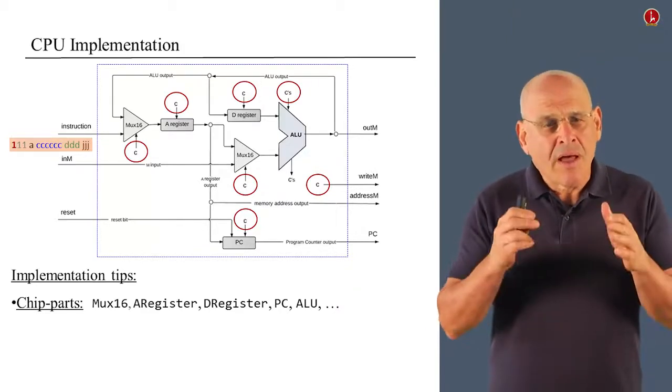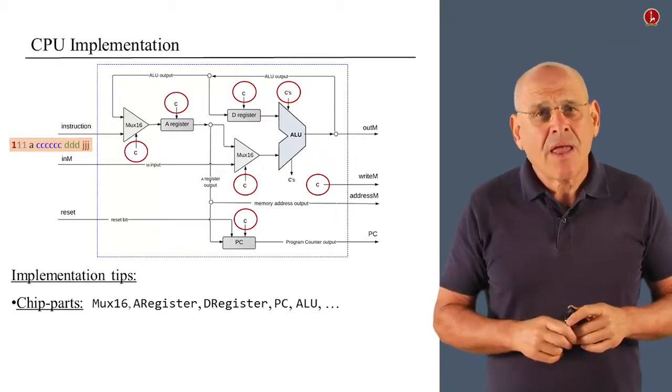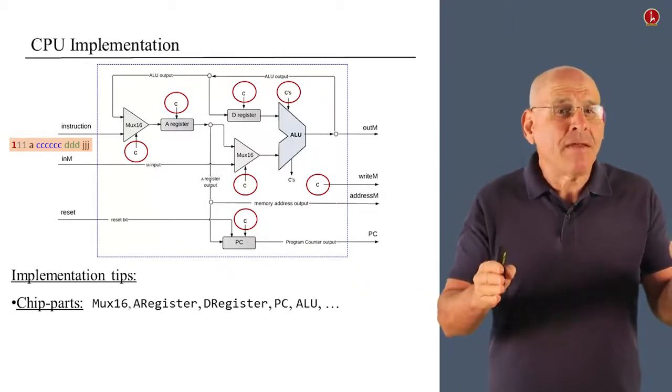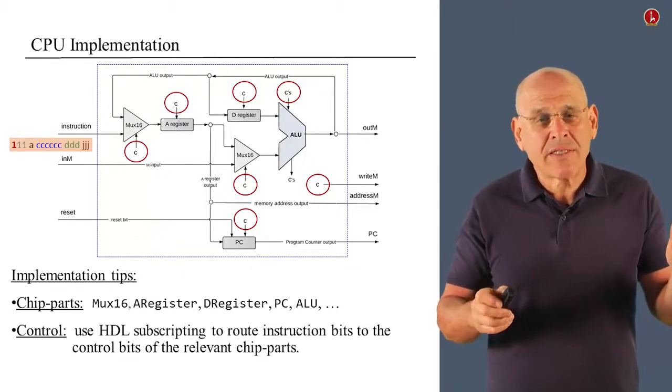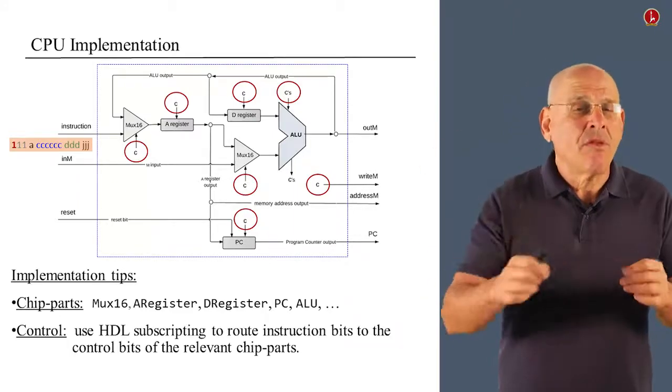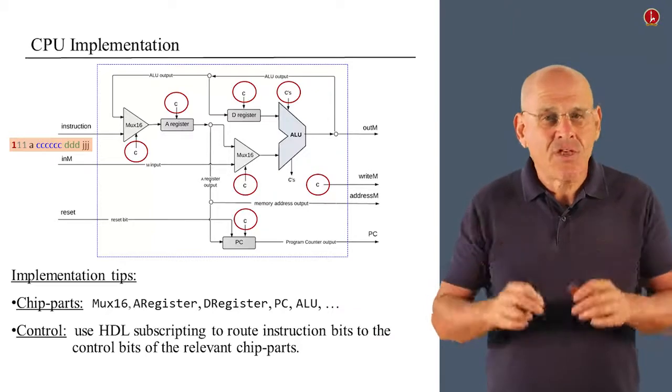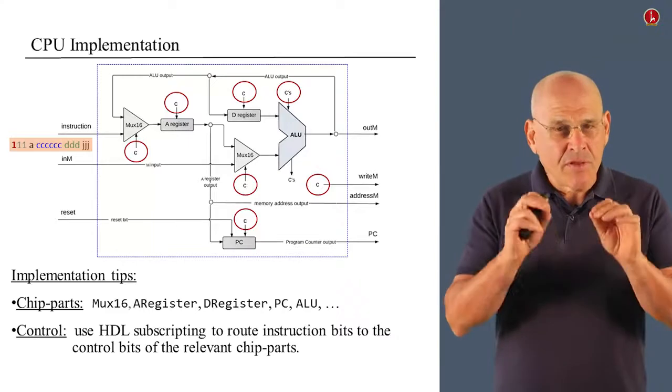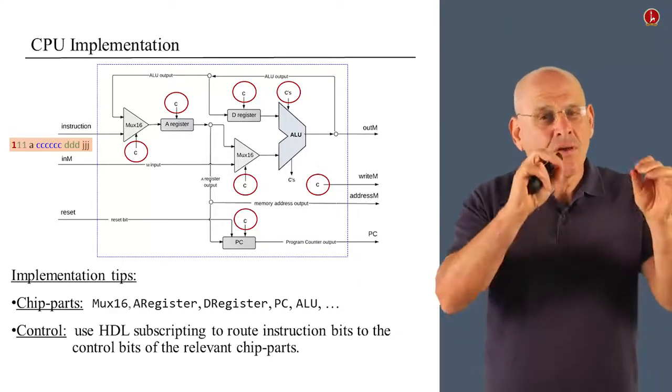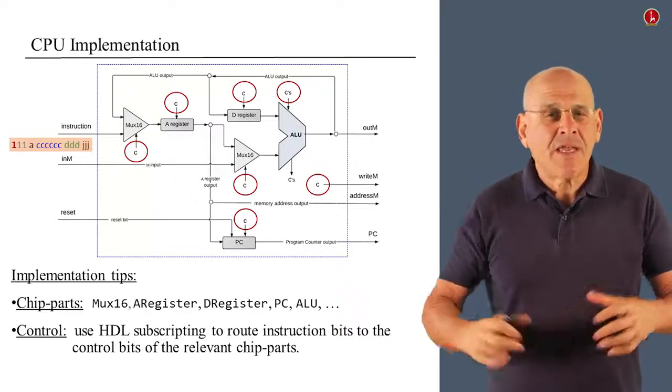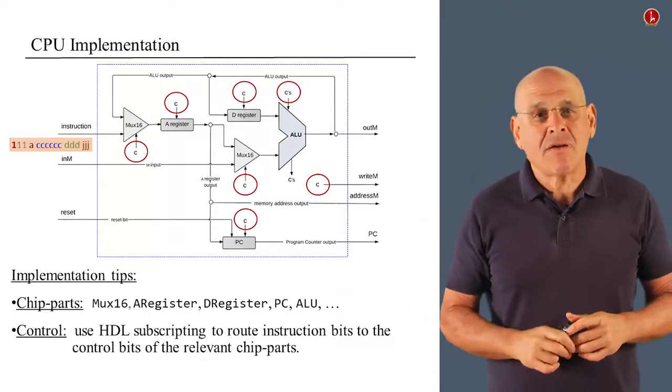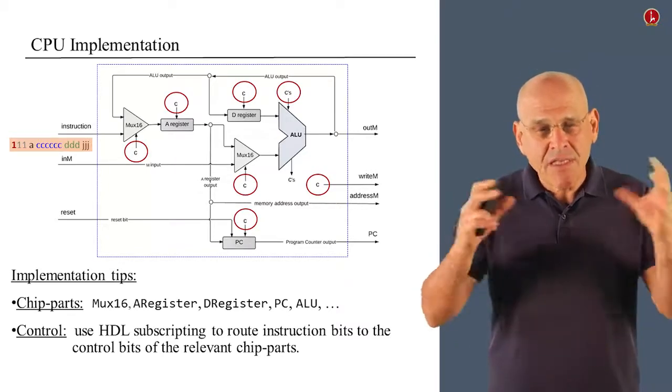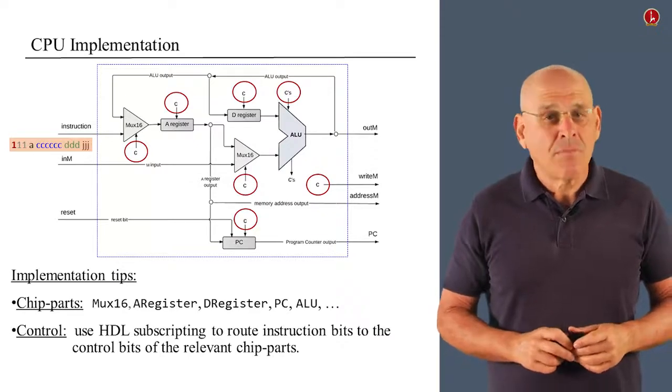So we see an instruction coming in. And your job as the designer of this chip is to unpack these control bits and send them or route them using HDL to their correct destinations in the various chip parts that make the overall architecture. So if you do this carefully, if you figure out which control bit has to go where, you will basically glue all these parts together in a logical way. And at the end of this synthesis, you will get an overall CPU architecture.